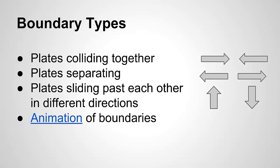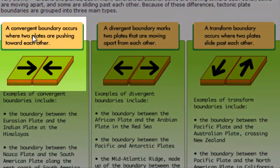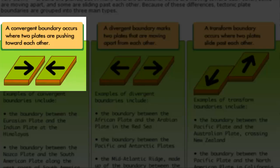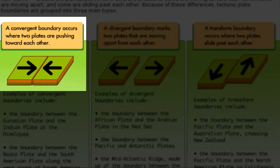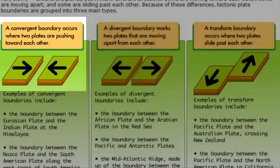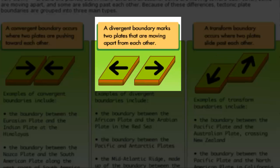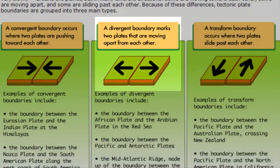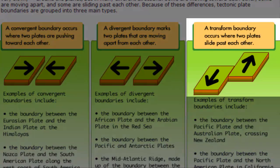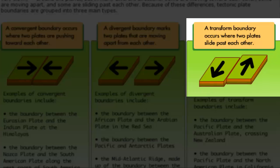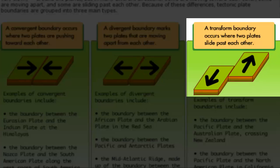There are different combinations, but these are the three main ones. When plates are colliding together, or coming together, those are called convergent boundaries. When plates are separating, those are called divergent boundaries. Transform boundaries are where plates slide past each other.